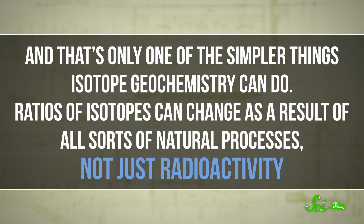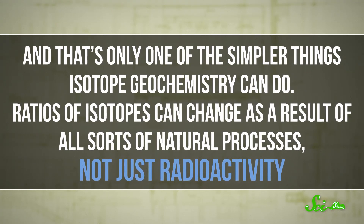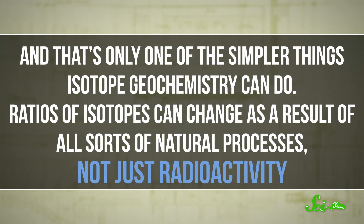And that's only one of the simpler things isotope geochemistry can do. Ratios of isotopes can change as a result of all sorts of natural processes, not just radioactivity. The ratio of carbon isotopes can show whether carbon trapped in a mineral was once used for photosynthesis, and therefore was part of something alive at some point. And sulfur isotopes can be used to show whether a mineral was formed near the surface of the Earth or much farther down. Isotope geochemistry gives us all kinds of information about the world's oldest rocks.